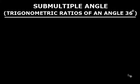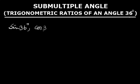Welcome, students. In this video I am going to discuss the trigonometric ratios of the angle 36 degrees — that is, we have to find sine 36°, cos 36°, and tan 36°.